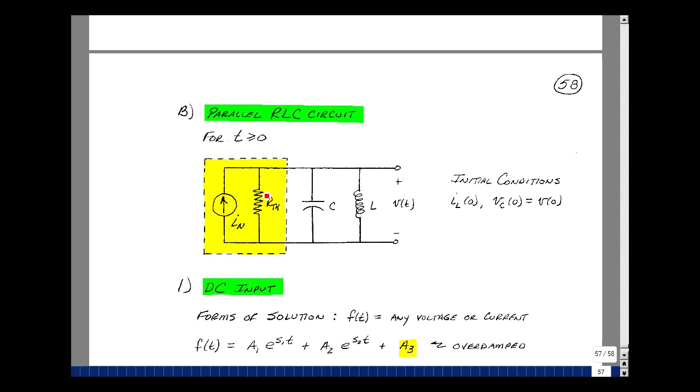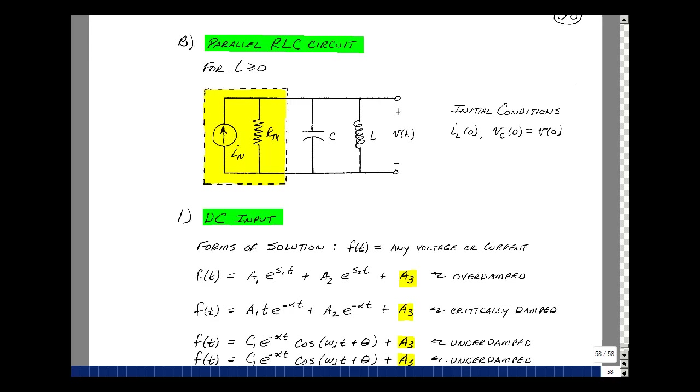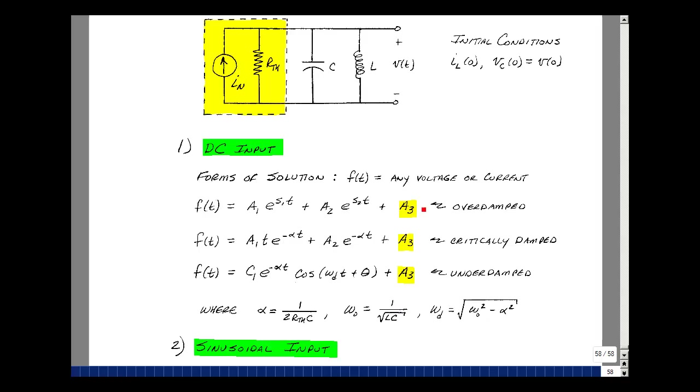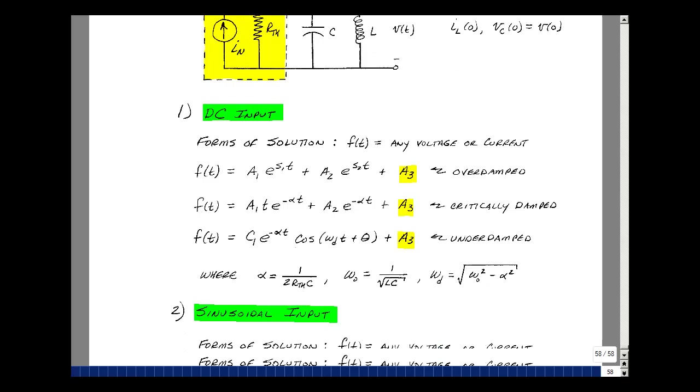And any voltage or any current in this circuit would be of the same form. If we have a forcing function that's DC, we'll have a resulting output that's DC. These were the values of alpha and omega naught and omega_d we had found in the parallel case. And so the methodology is the same as the series case we just looked at.